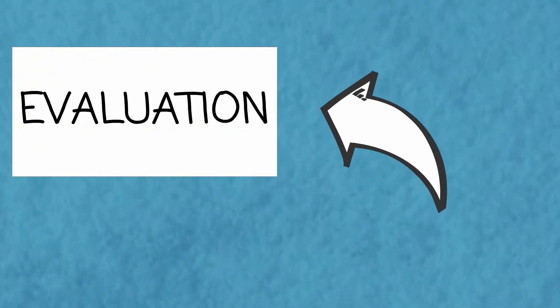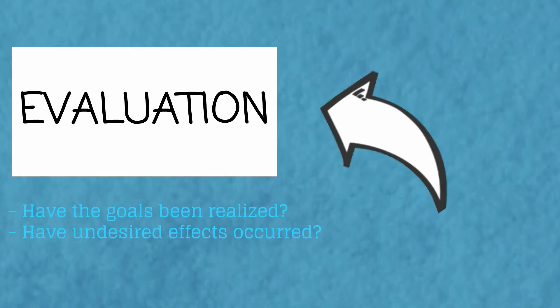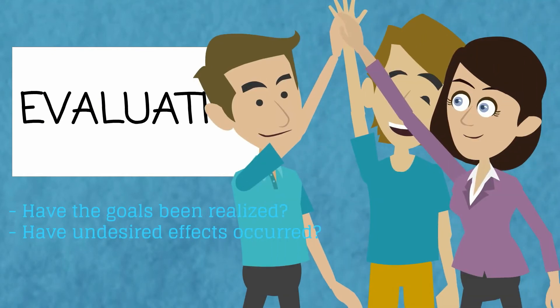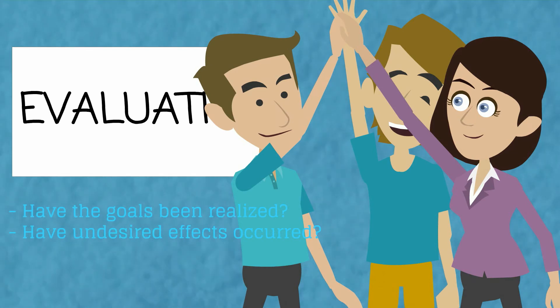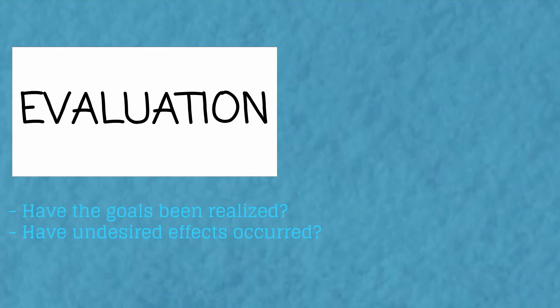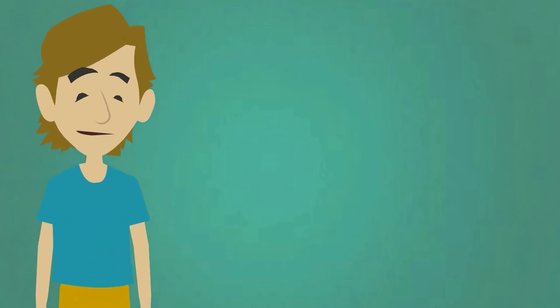In this stage, the effects of the implementation are evaluated. Two questions are essential here. Firstly, have the goals been realized, or to what extent have the goals been realized? And secondly, have any undesired effects occurred? The answers to both questions must then finally be combined in order to come to an overall evaluation, which can then provide input for a reiteration of the intervention cycle.